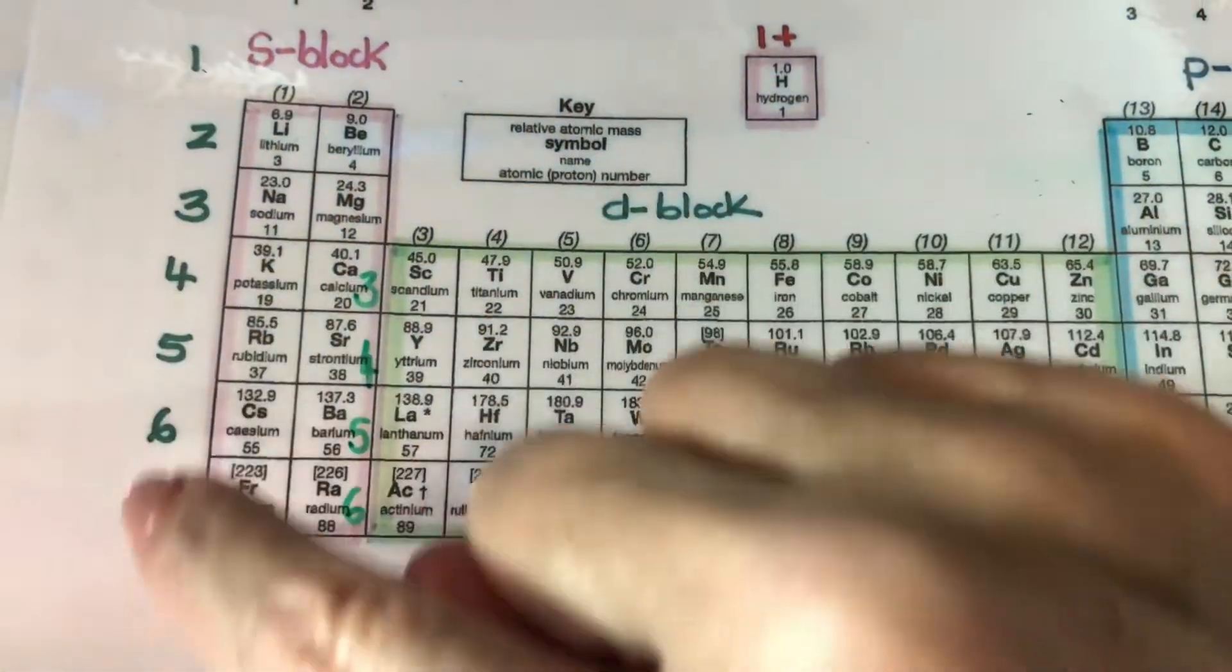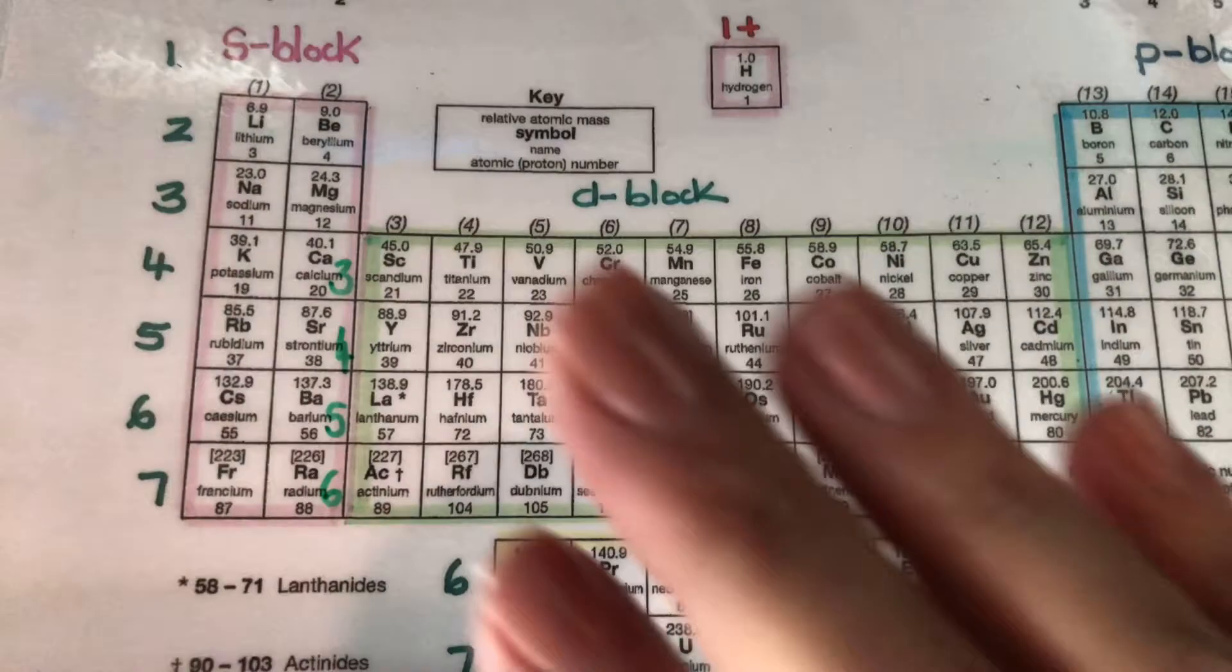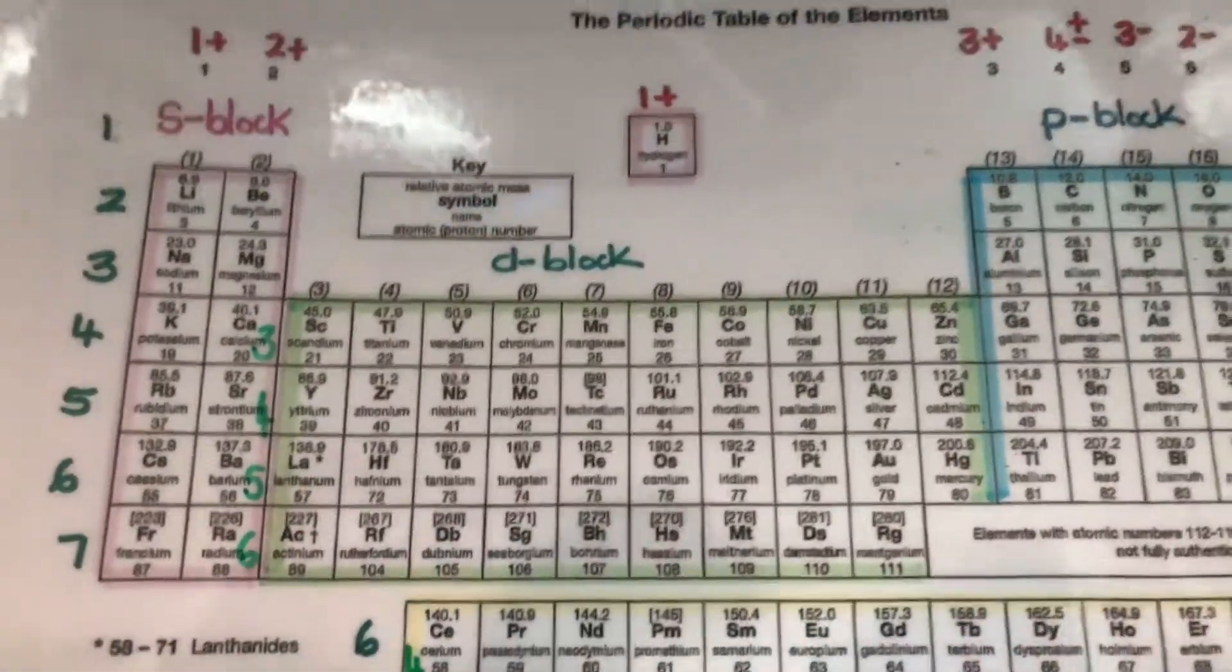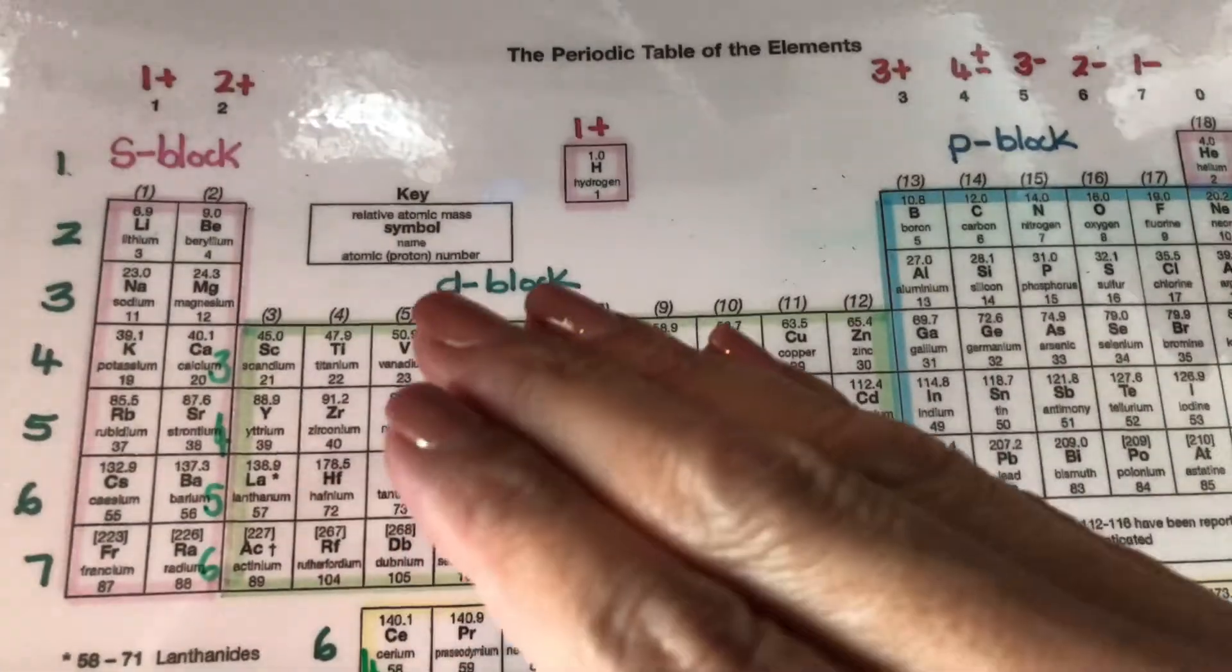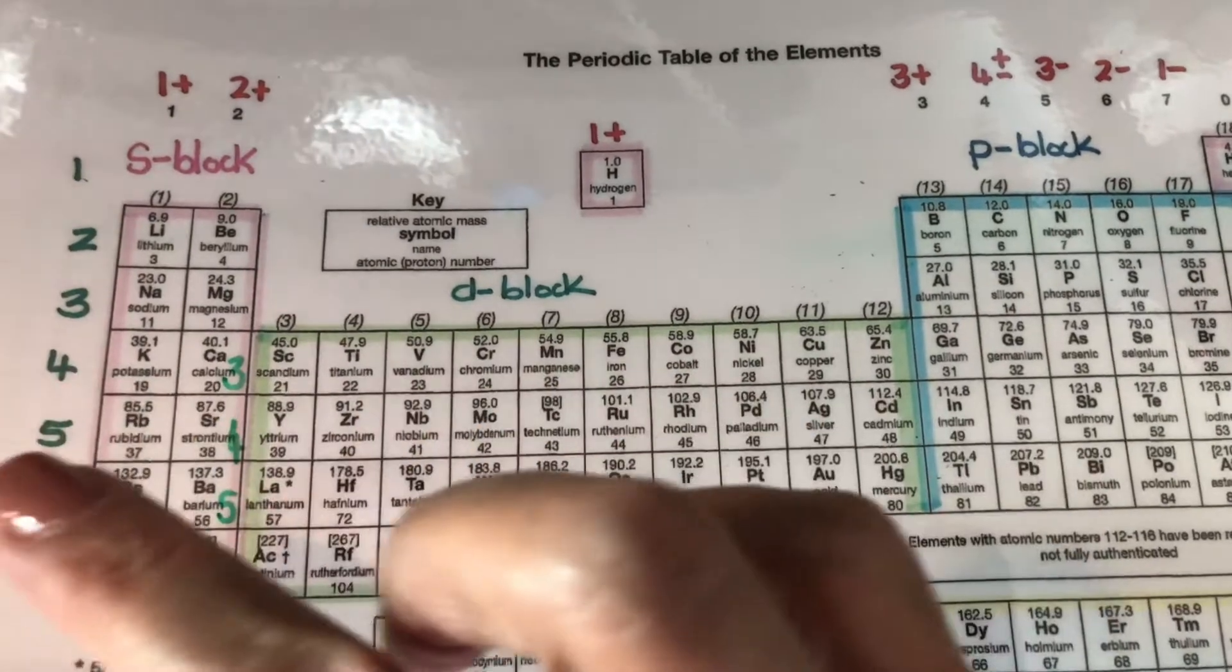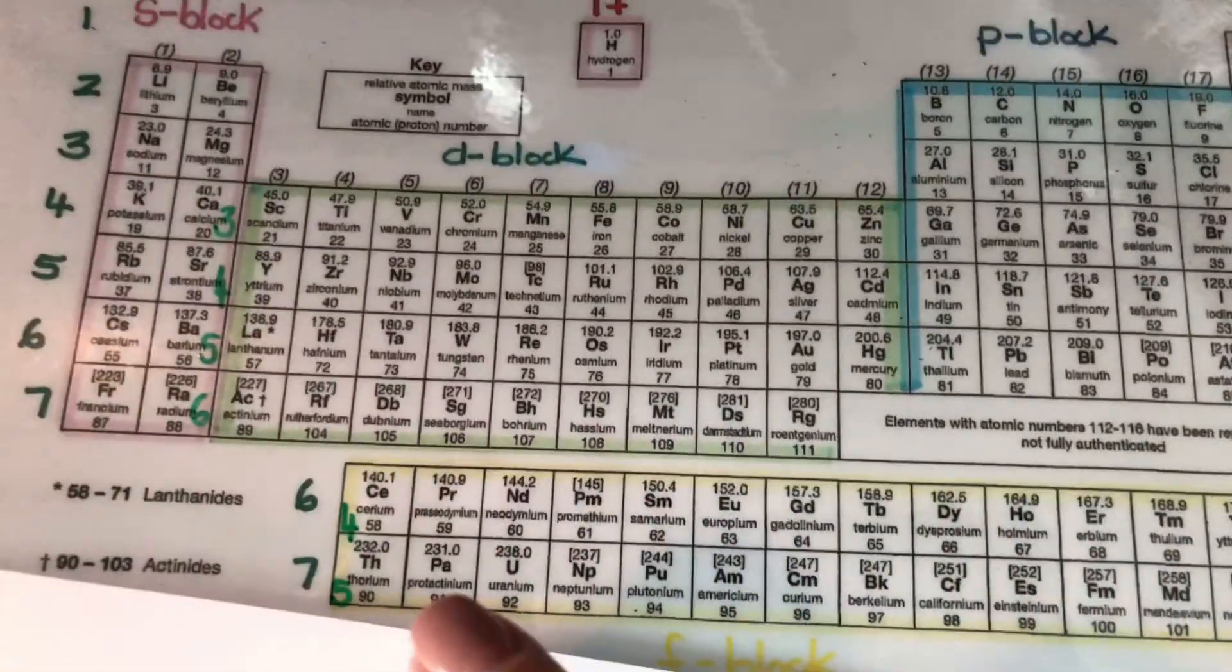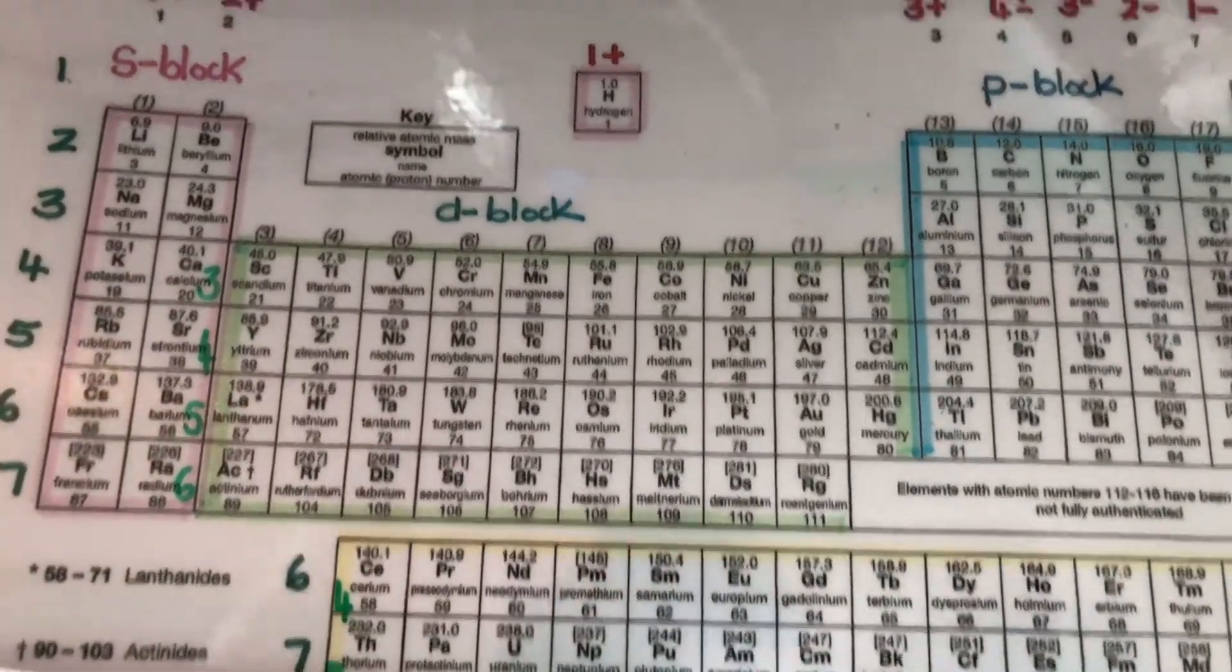So these are the period numbers which is fine when you work with the S and the P orbital but when you work with the D orbital you have to go one down and when you work with F orbitals then it's four and five.